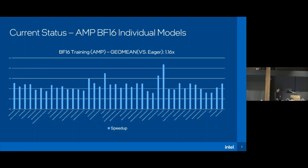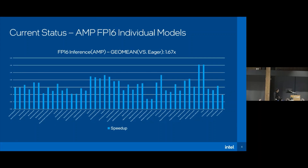I will introduce later how to optimize these cases and what the root causes are. Regarding FP16 inference mode, most of the performance is better than eager mode, and the outlier portion is about 5%.